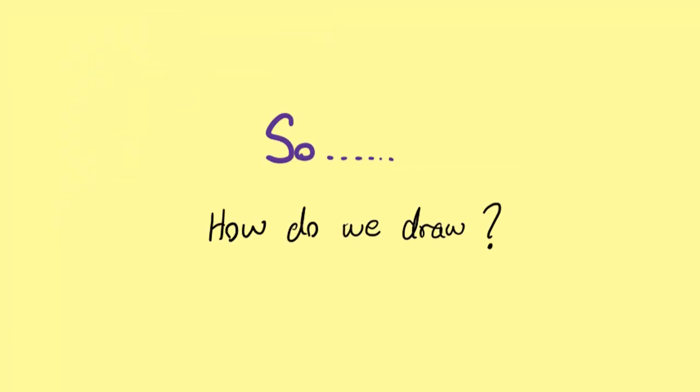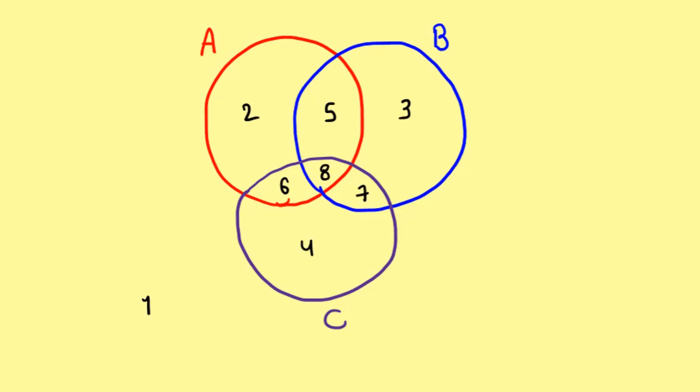So how do we draw? To answer that, let's go back to three circles. Here, these three circles divide the plane into eight regions.